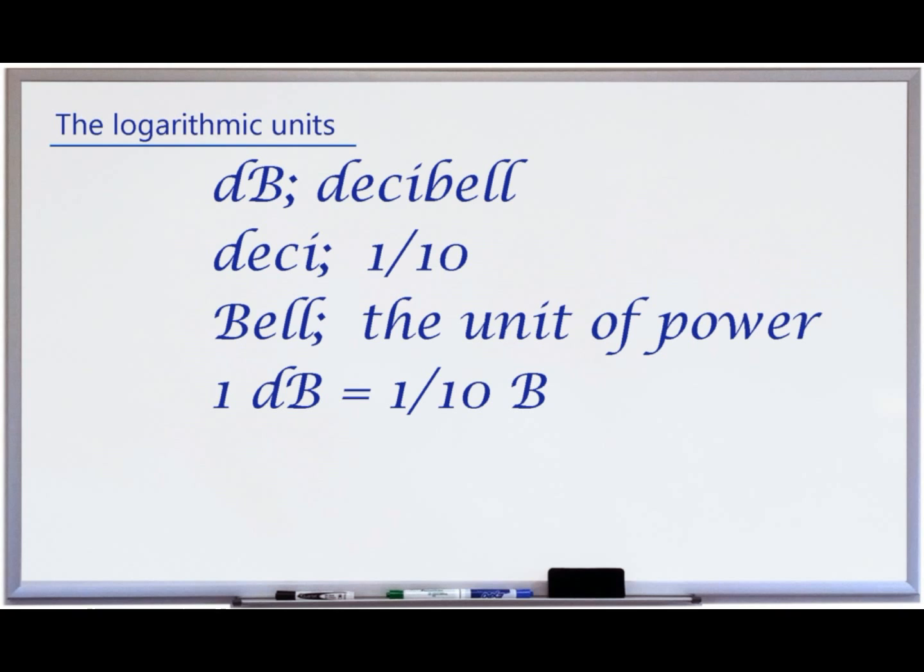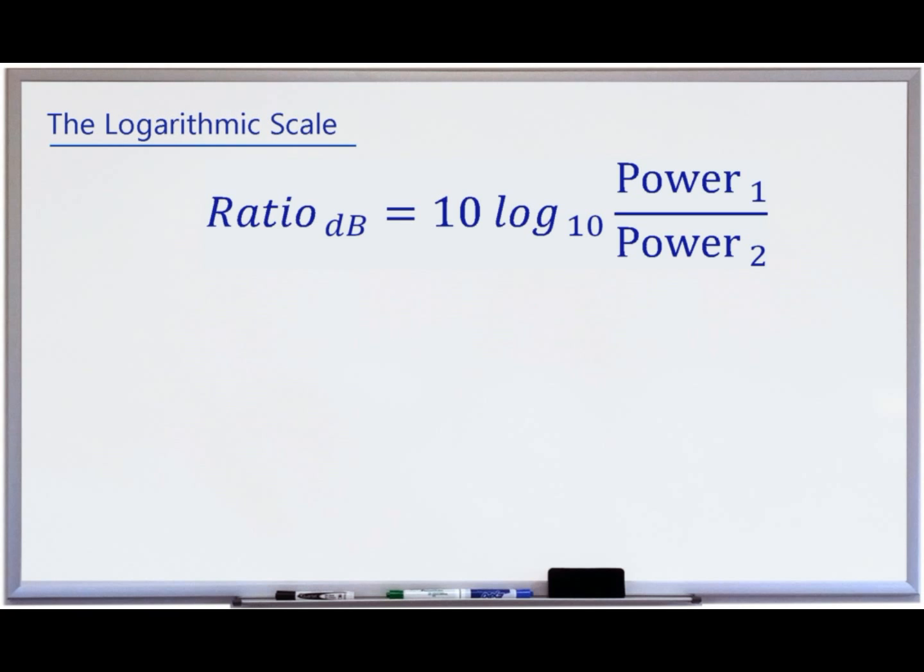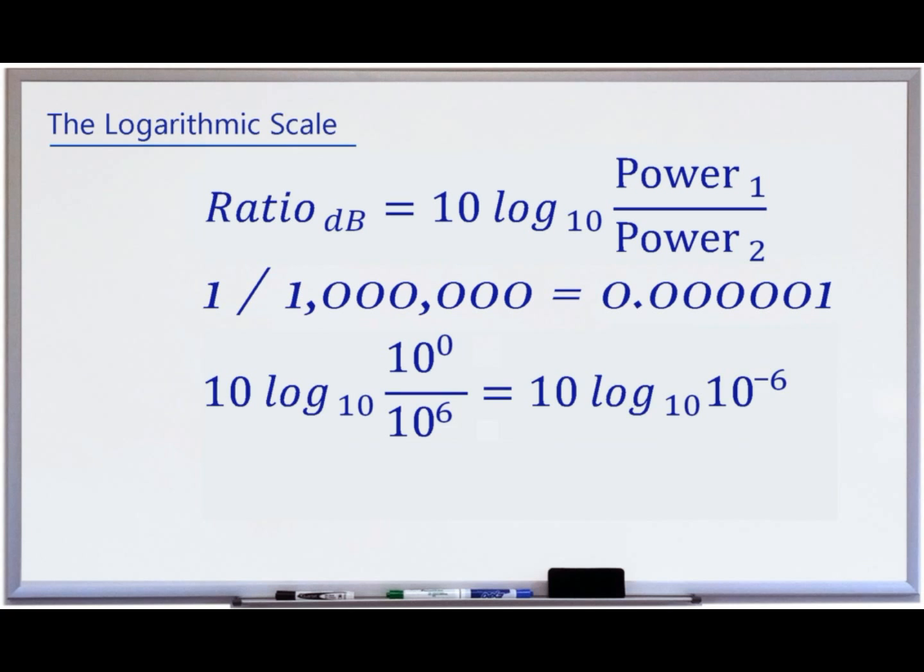A change by 1 dB is about the smallest difference in sound level that the human ear can detect. dB is a base 10 log ratio of the power of two signals. Smaller levels of various components of a composite signal have a greater presence in a log scale than in a linear scale. For example, in a linear scale of 1 million, 1 is insignificant, comparably its equivalent value of minus 60 dB in a logarithmic scale stands out.